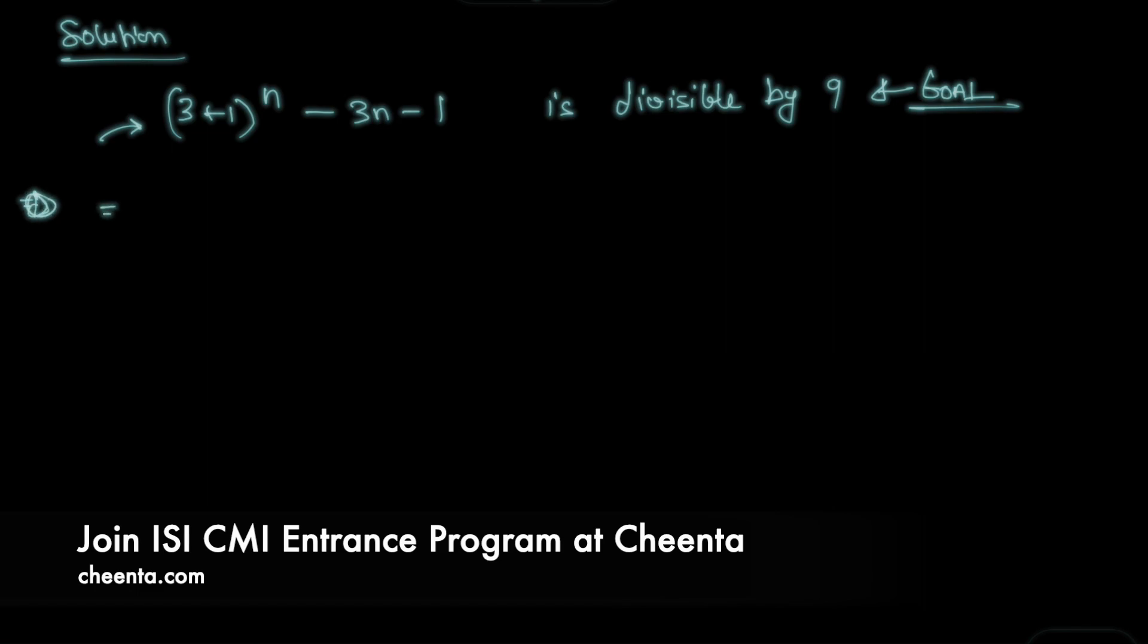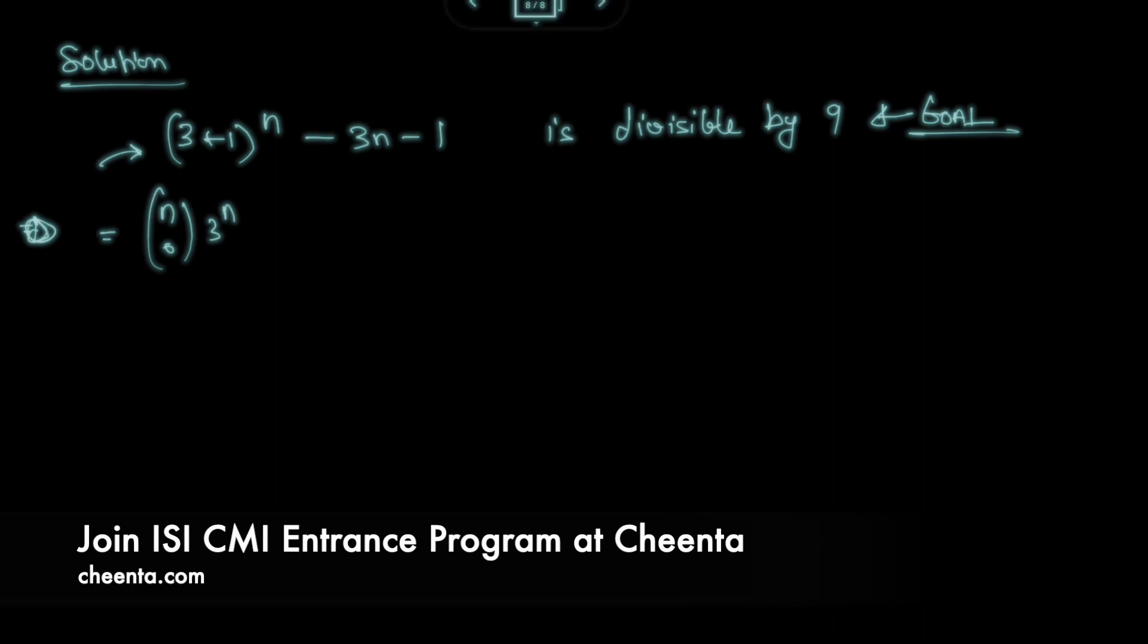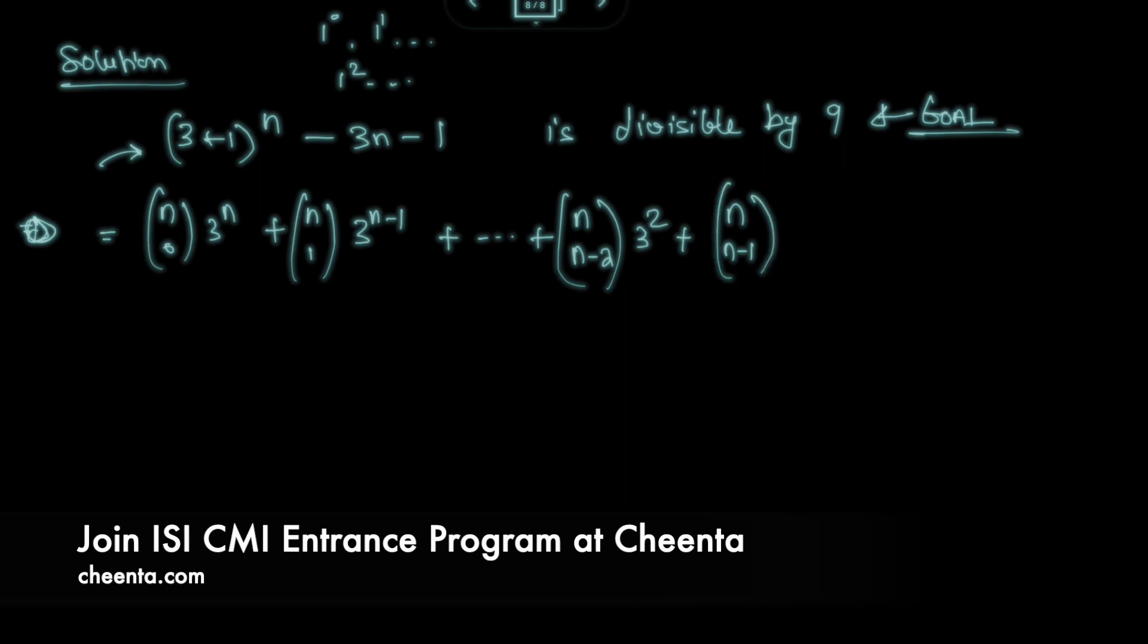We say, okay, that this is n choose 0, 3 to the power n. Of course, 1 to the power 0, 1 to the power 1, but it really doesn't matter because all of them will be 1, so I'll not write them. Plus n choose 1, 3 to the power n minus 1. I'll go ahead and write it up to n choose n minus 2, 3 squared, n choose n minus 1, 3 raised to 1, n choose n times 1, minus 3n minus 1.